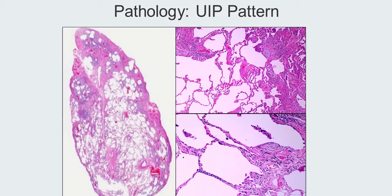Under even higher power, the bluish areas of cells you can see — these spindle-shaped cells — are the fibroblasts. They typically occur in foci altogether, and a lot of times you'll see these fibroblastic foci at the interface between abnormal and normal lung.